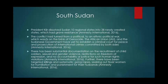President Kiir, president of the South Sudanese government, initially dissolved Sudan's original 10 regional states into 28 newly created states, which met grave resistance from the populace. The conflict turned from a political to an ethnic political war, on the brink of genocide for many ethnic groups. The African Union and the Sudanese government have yet to establish a criminal court for peace and prosecution of international crimes committed by both sides. There has been substantial documentation of the recruitment of child soldiers, sexual and gender violence, restrictions on freedom of expression, and no accountability for such human rights violations. There have also been targeted killings and systematic gang rapes targeting women known as Nuer women, for humiliation and punishment for their husbands' participation in the conflict.